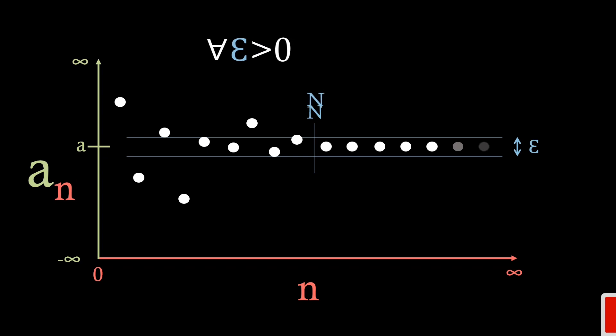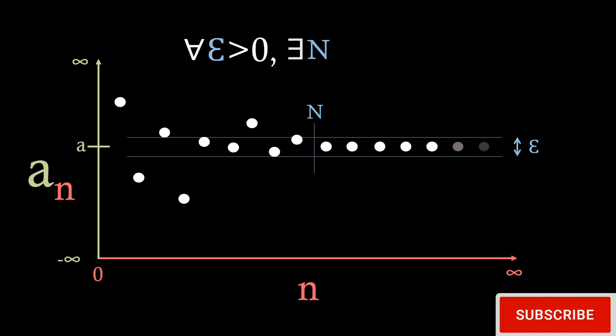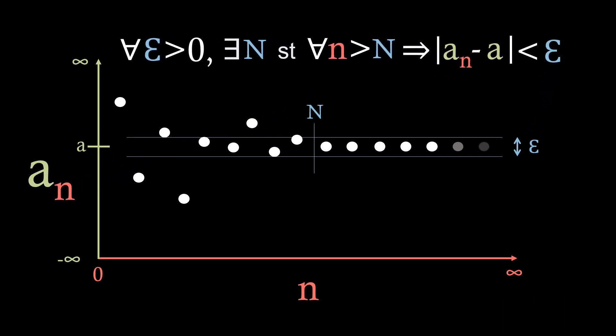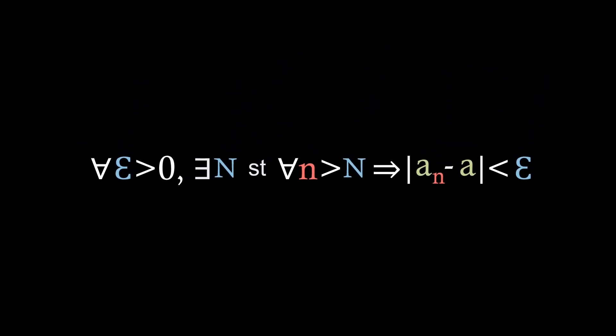So now that we've got the epsilon value, the next thing we need to do is find this big N. So if we remember back, this big N denotes the first index value where every single index after it is within this epsilon range. In more formal terms we write this as for all little n greater than big N implies that the absolute value of a_n minus a is less than epsilon. So there we go, we've got the formal definition of what it means for a sequence a_n to converge to a limit a.